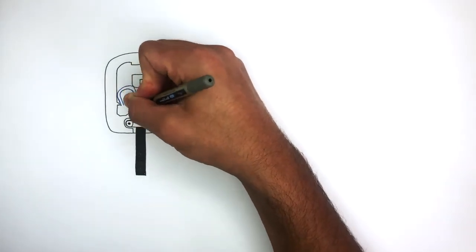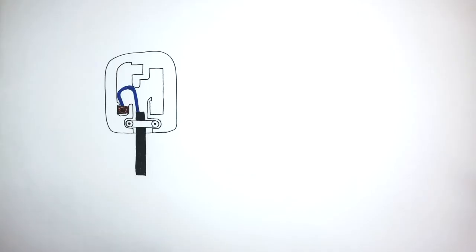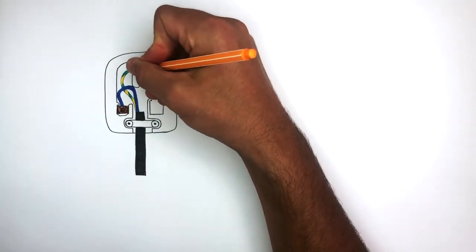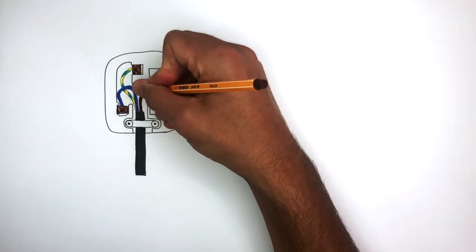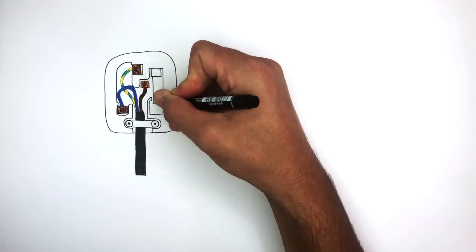So this blue wire, which is the neutral wire, is connected to the neutral pin of the plug. This green and yellow wire, which we know is the earth wire, is connected to the earth pin, and this brown wire, which is the live wire, is connected to the live pin. And this is the fuse.